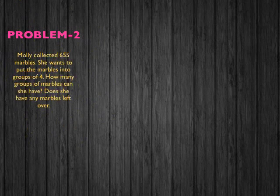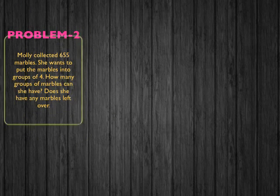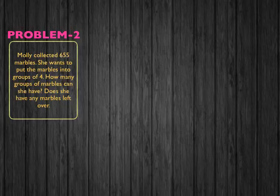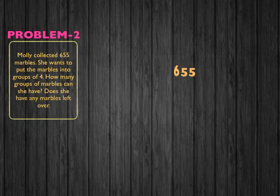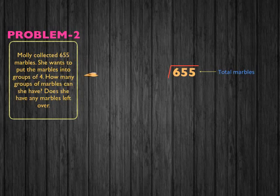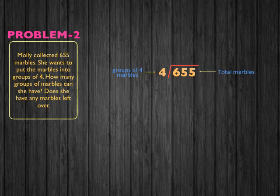Okay students, for problem two, Molly collected 655 marbles. She wants to put the marbles into groups of four. How many groups of marbles can she have? Does she have any marbles left over? So 655 total marbles divided by 4 — the number of marbles that can be in a group. We need to figure out how many groups of four can go into 655.